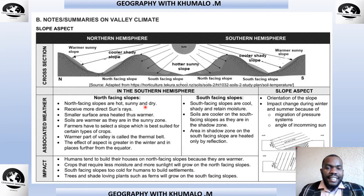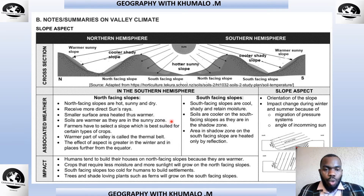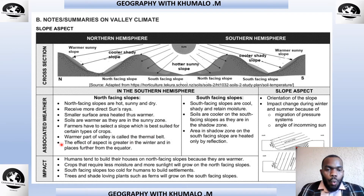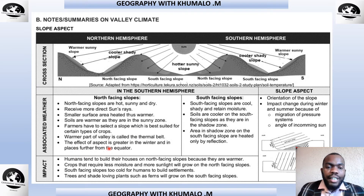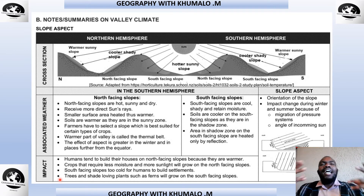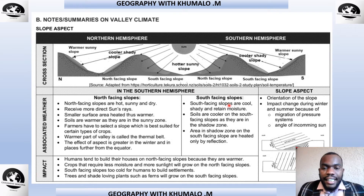The north-facing slopes are hot, sunny, and dry in the southern hemisphere. They receive more direct sunlight, smaller surface areas are heated, and soils are warmer as they are in the sunny zone. Farmers have to select a slope best suitable for certain types of crops. The warmer part of the valley is called the thermal belt. The effect of aspect is greater in winter and in places further from the equator.